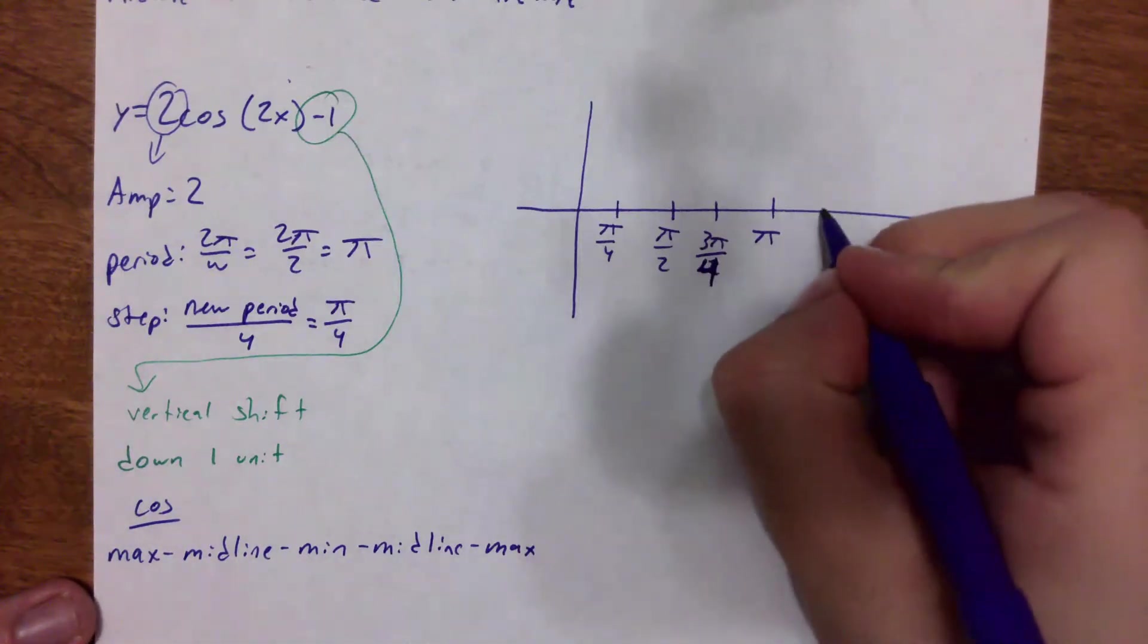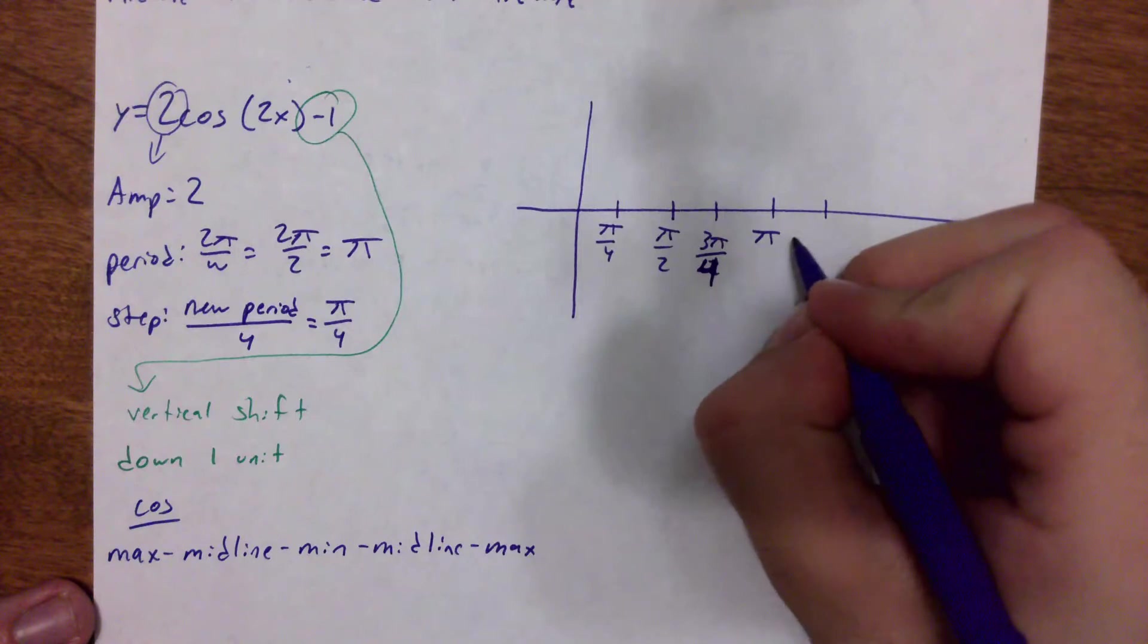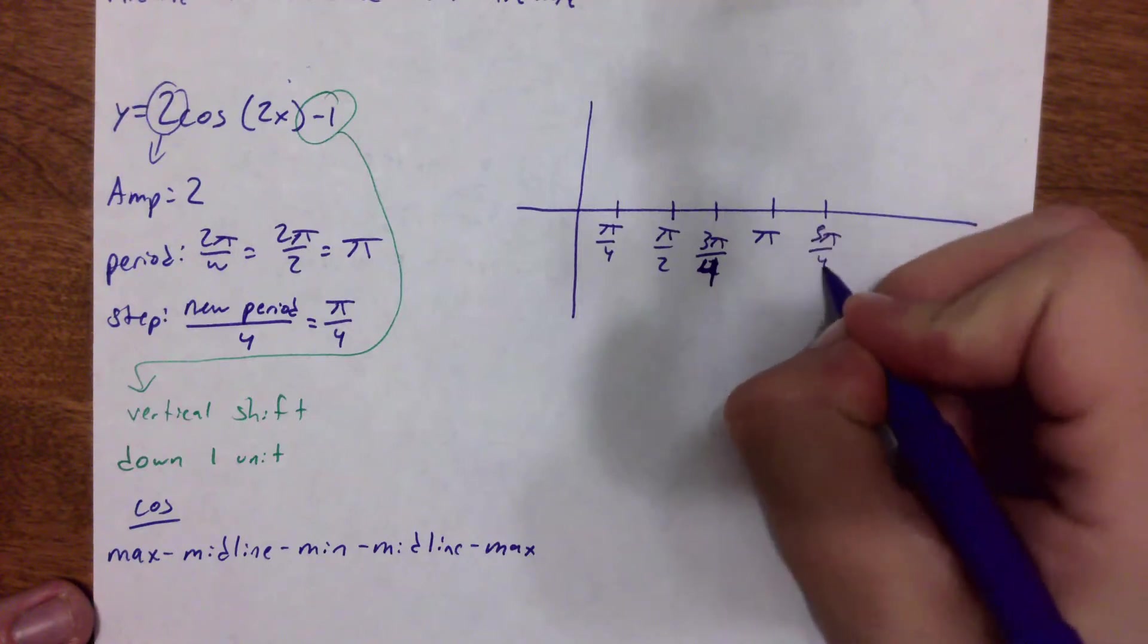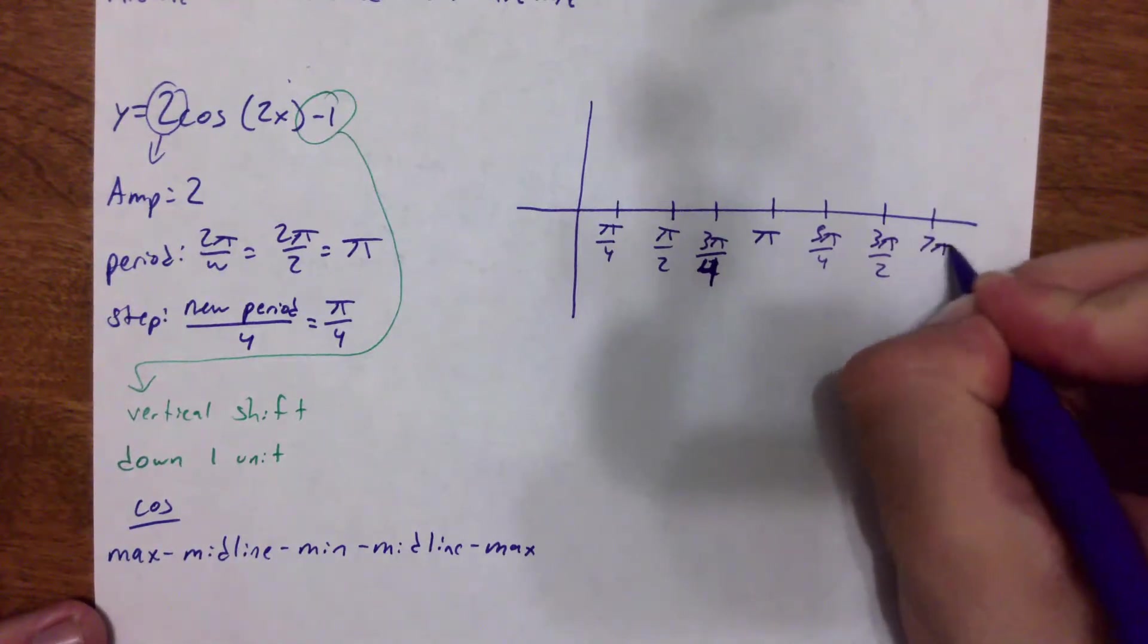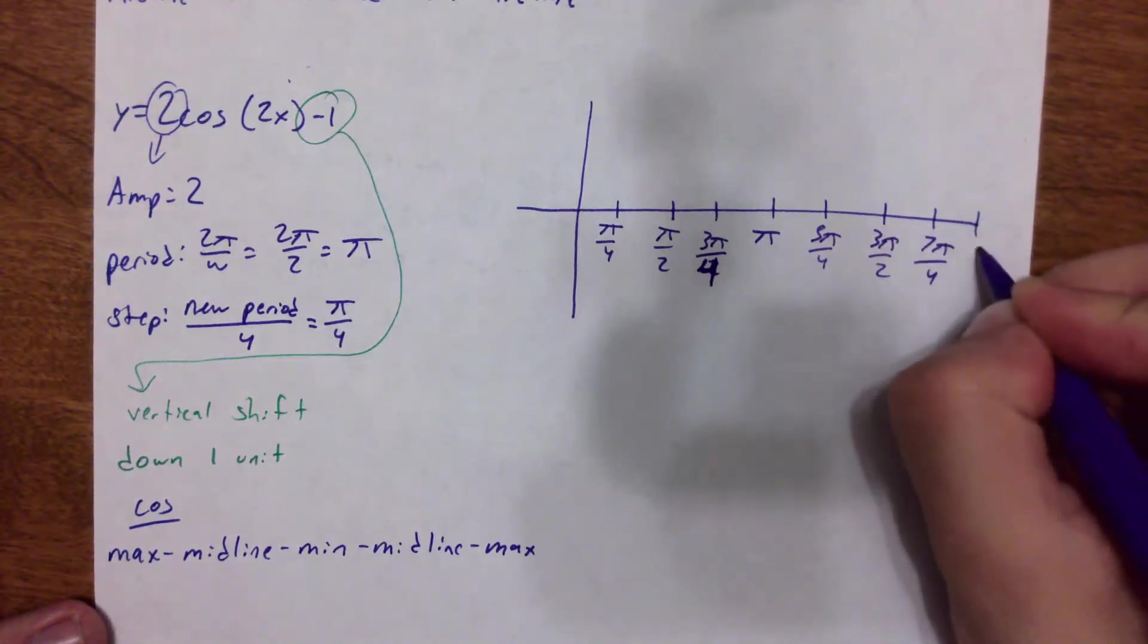And I'm going to keep going. So 4π over 4, 5π over 4, 6π over 4 becomes 3π over 2, 7π over 4, and 2π.